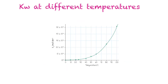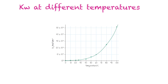Looking at this graph, we can see the equilibrium constant at different temperatures. It starts low around 0°C, reaches 10 to the negative 14 near 20°C, and then starts to decrease as you go to higher temperatures. So the equilibrium constant is increasing, which means the pH is decreasing.